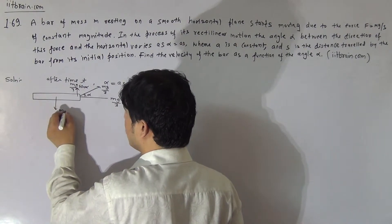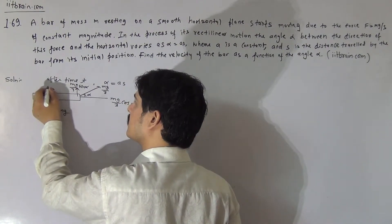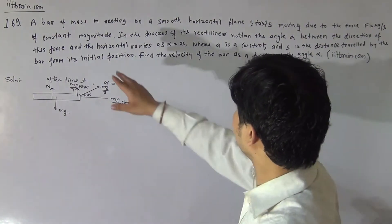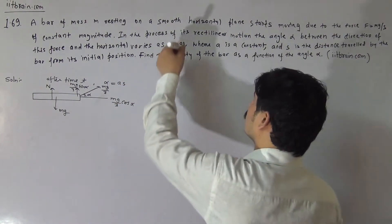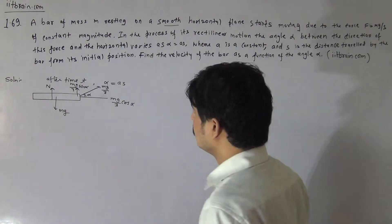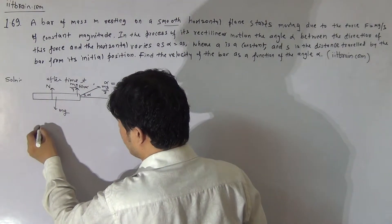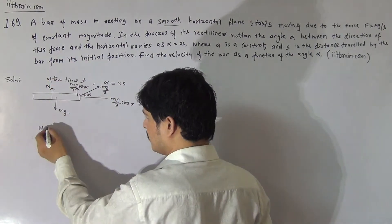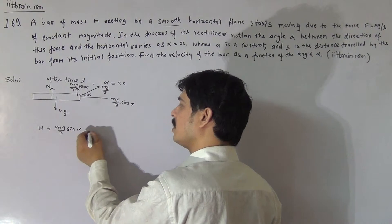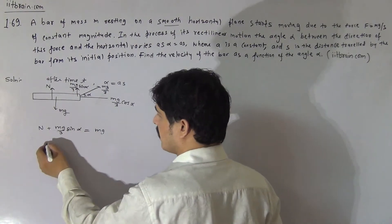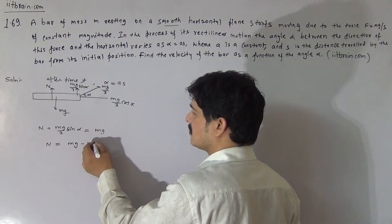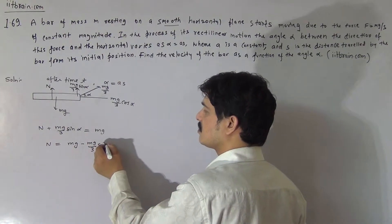Besides, there is the weight Mg of the bar and normal reaction N from the ground. The bar rests on a smooth horizontal plane, and since the plane is smooth there is no friction component. The vertical balance equation gives N plus Mg by 3 sin alpha equals Mg, so normal reaction N equals Mg minus Mg by 3 sin alpha.